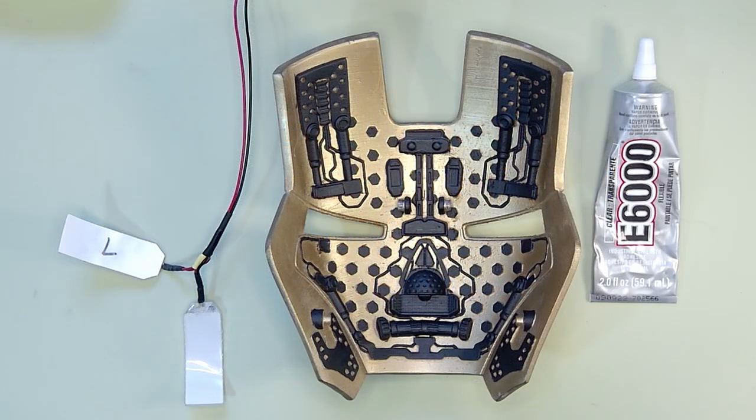Alright, so today we're going to glue in the LED eyes. Some materials that you're going to need: obviously your LED eyes, and in another video I showed you how to solder them together. You're going to need your faceplate. This one is the Walsh Mark 39. Thanks Walsh again for such a great model.